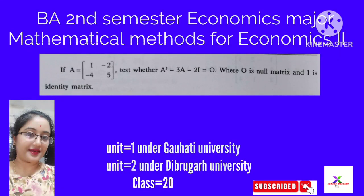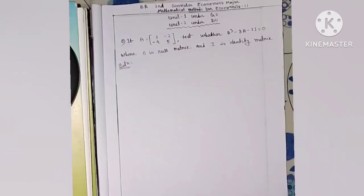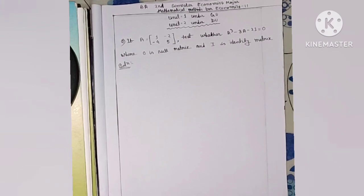Welcome to the new video. Today I will show you the BA Second Semester Economists Major Mathematical Methods for Economists 2 paper, where the University of Gauhati Unit No. 1 and the Dibrugarh University Unit No. 2 and 3, and the Matrix Unit. Here's the question.